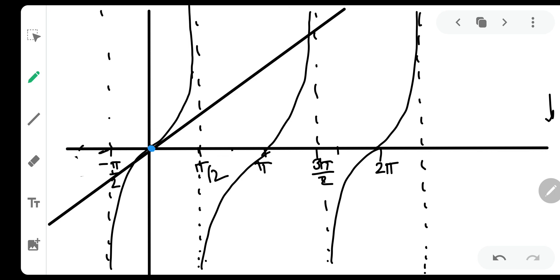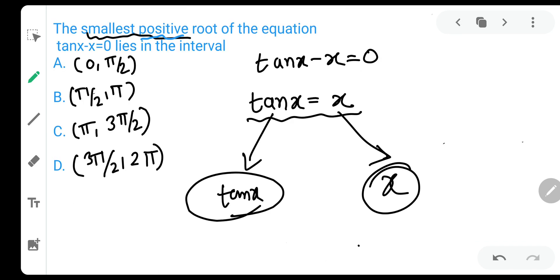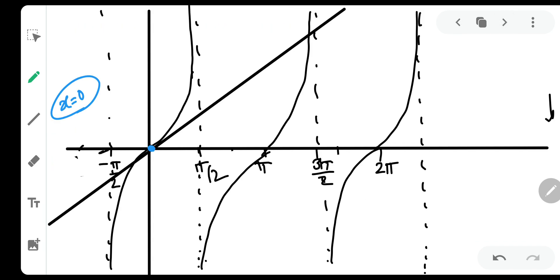Now as you can see, this particular line, as I can show you, is cutting the tan(x) axis at x = 0. It means at x = 0, both the values are equal: y = x and tan(x) also. So x = 0 is one of the solution, but they have asked us the smallest positive root, and x = 0 is not the positive root.